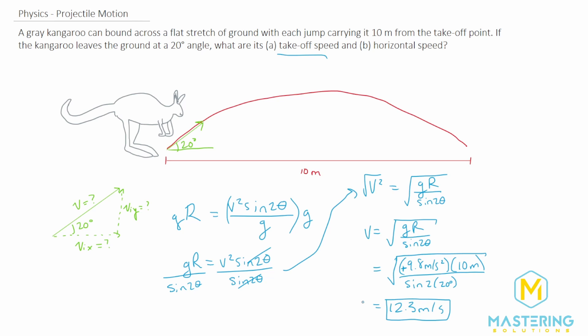Now we can take this velocity and come back up here and plug it into our triangle that we made. Now we have the hypotenuse of our right triangle, and we want the adjacent to the angle, so we'll use cosine.